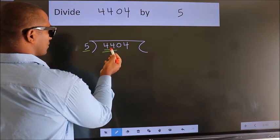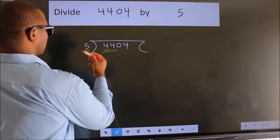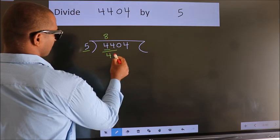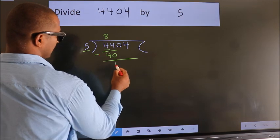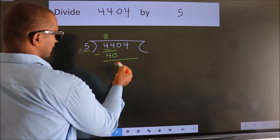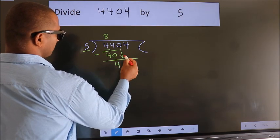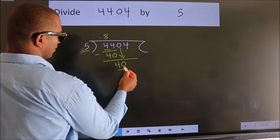A number close to 44 in the 5 table is 5×8=40. Now we should subtract. We get 4. After this, bring down the beside number. So 0 down. So 40.